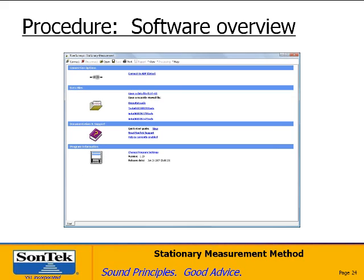Now we're going to go through the software and show what you see when actually making a stationary measurement. The software starts with a basic screen providing all the information you need to get started. At the top are connection options to connect to the ADP for real-time measurements. The second step is looking at data files collected previously. The third section is documentation and support, with links to the online quick start guide and manual. The last section is program settings and software version, where you can change things like report language and unit system.